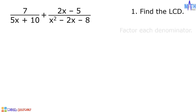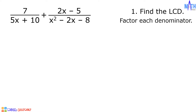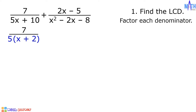To find the LCD, let us factor each denominator. In 5x plus 10, the common factor between 5x and 10 is 5. If we factor out 5, we are left with x plus 2, since 5x plus 10 divided by 5 is equal to x plus 2. Let us rewrite 7 over 5x plus 10 as 7 over 5 times quantity x plus 2.